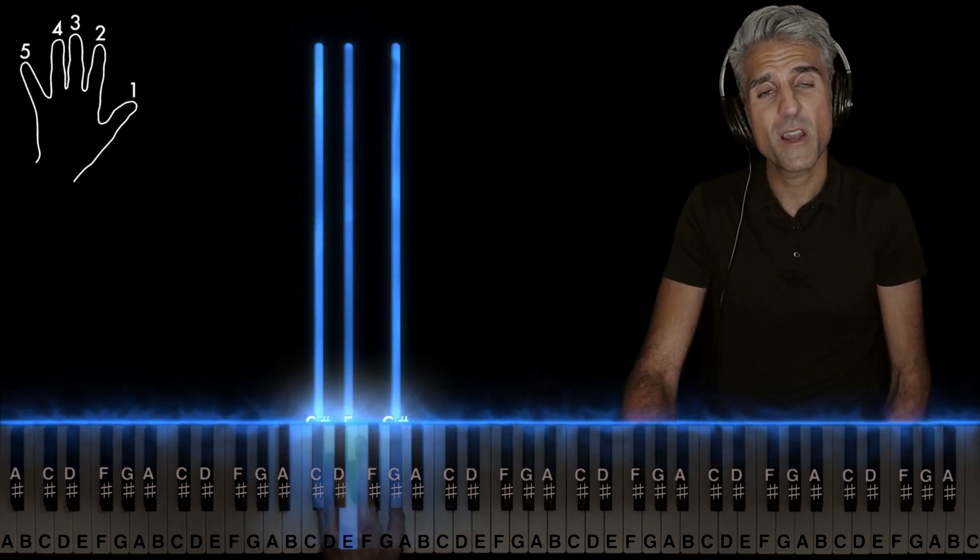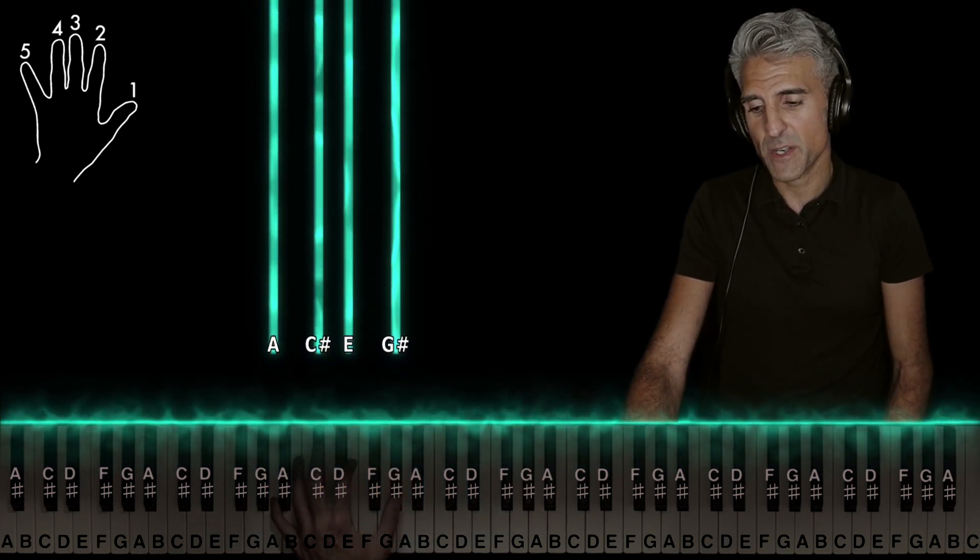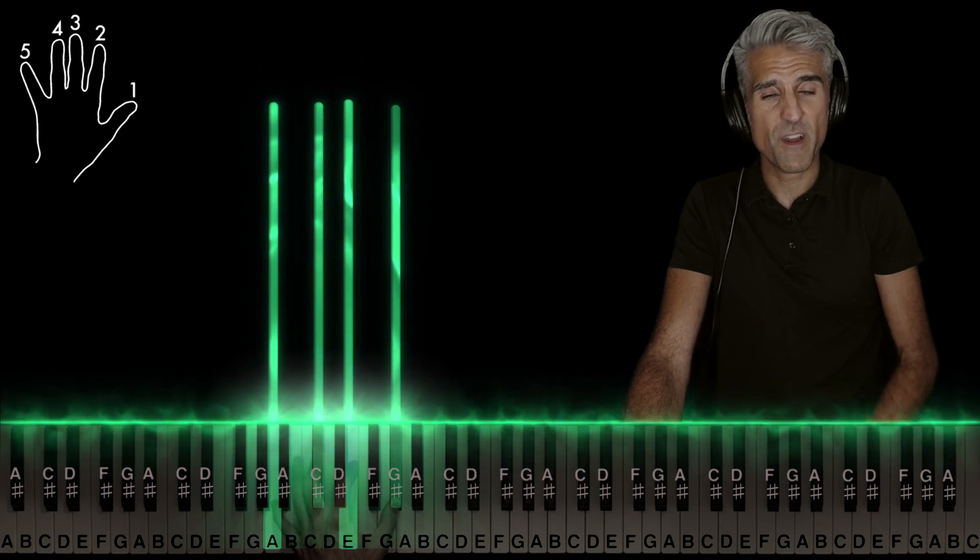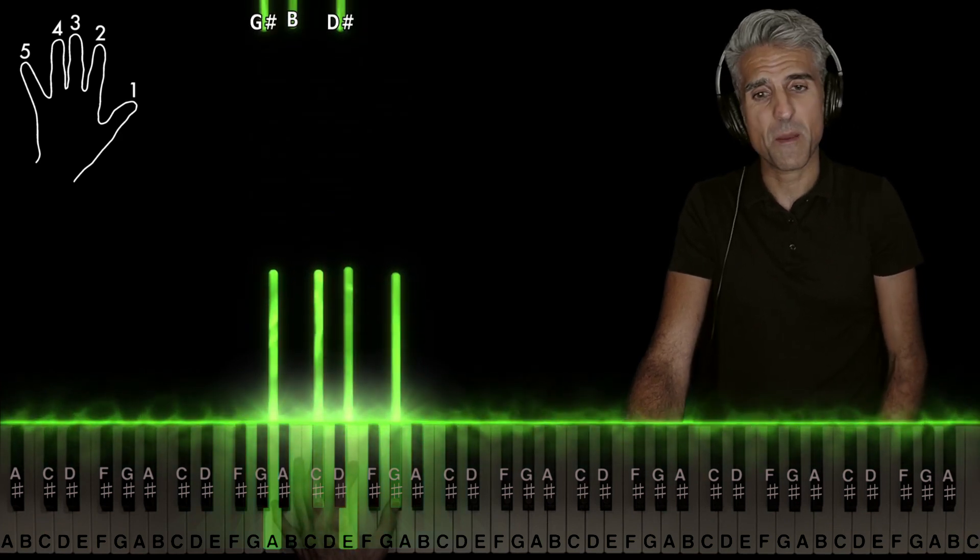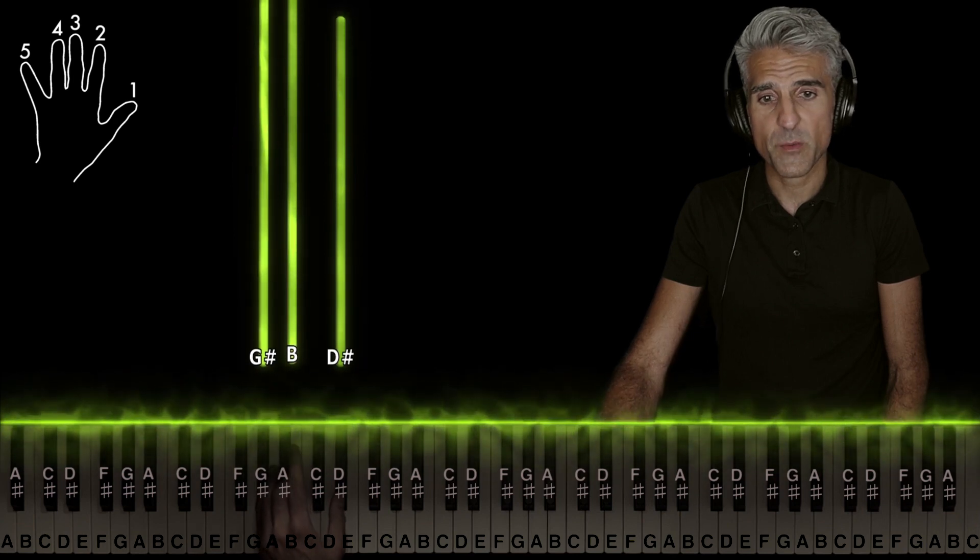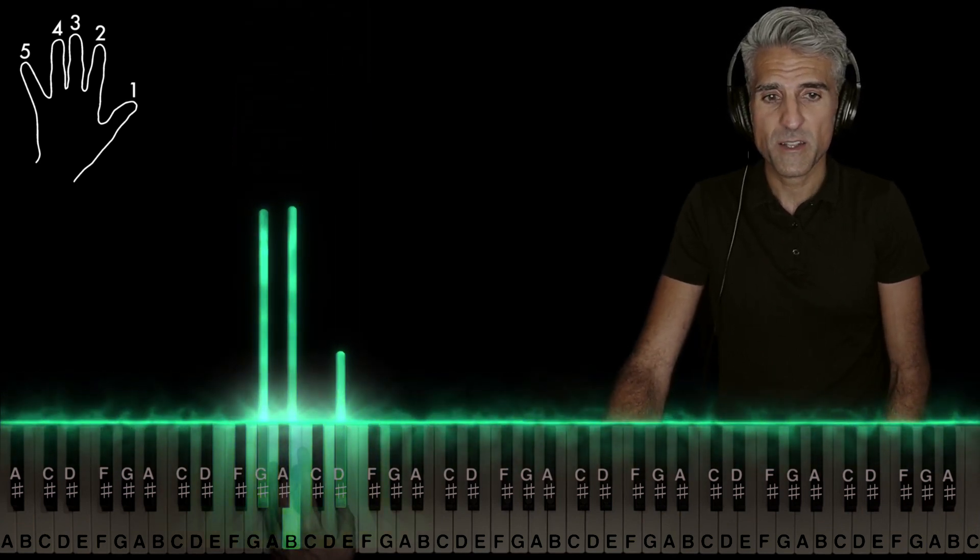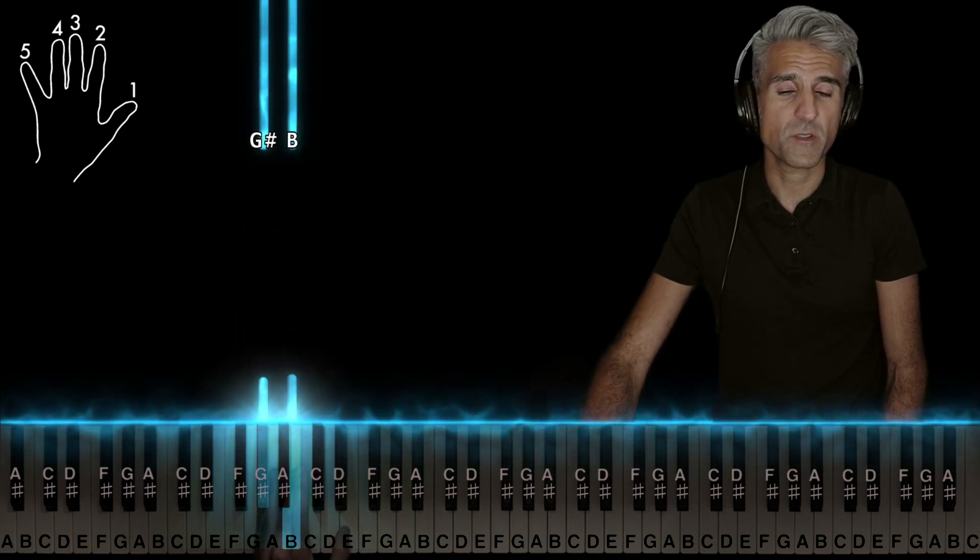Playing this chord, C sharp minor, and then take that chord and add to it an A. Use fingers five, three, and two, one, and this is called an A major seven. Move on down using fingers five, three, one, play this chord G sharp minor.